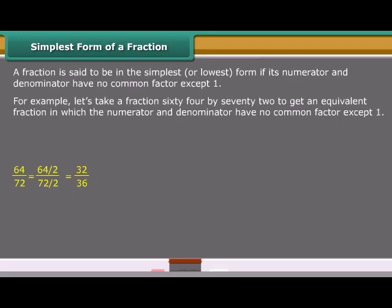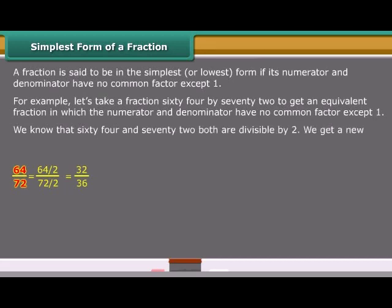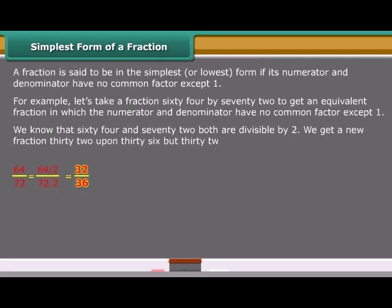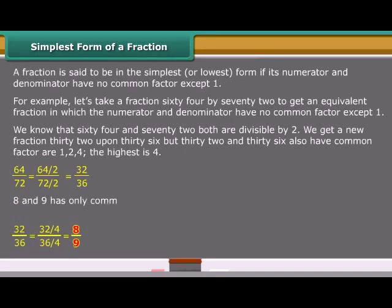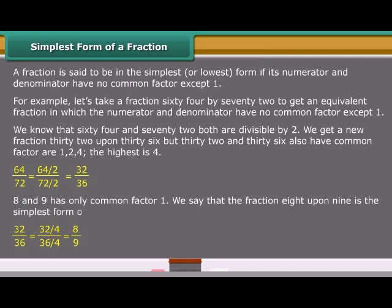We know that 64 and 72 both are divisible by 2. We get a new fraction 32 upon 36. But 32 and 36 also have common factors: 1, 2, 4. The highest is 4. 8 and 9 have only common factor 1. We say that the fraction 8 upon 9 is the simplest form of 64 upon 72.